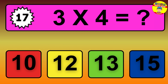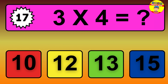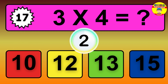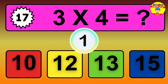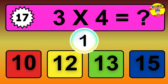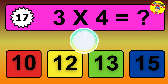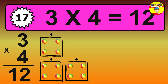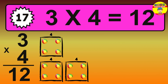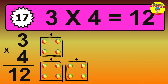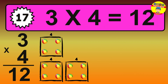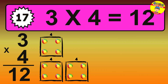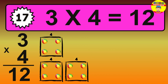Question 16. 5 times 4 equals what? The answer is 3 times 4 is 12. To calculate, we have 3 groups with 4 balls each. So how many balls do we have? 12 balls.